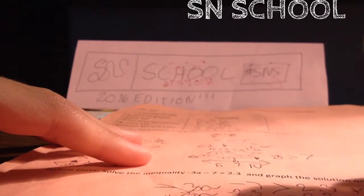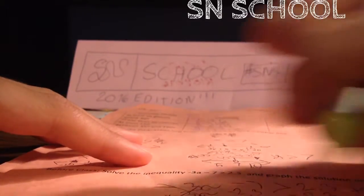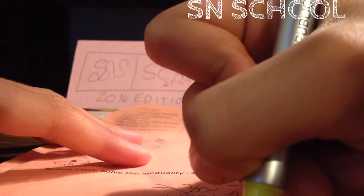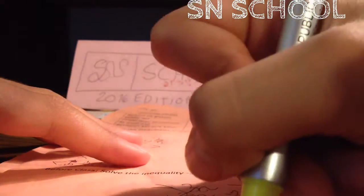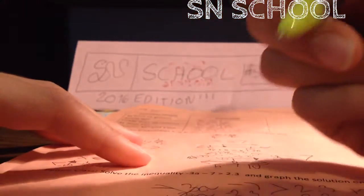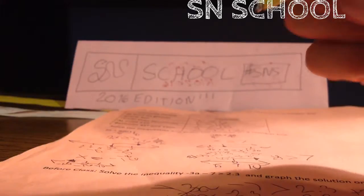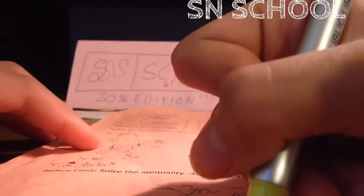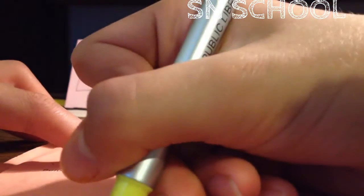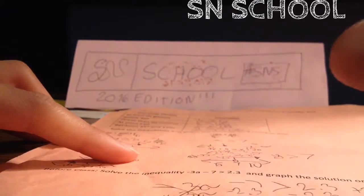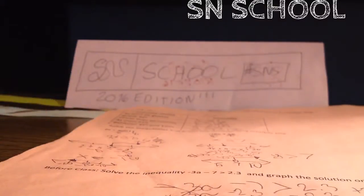3.1 is greater than a. So 3.1 is greater than a, so a would be less than 3.1. Let's put 0 and 5 here.